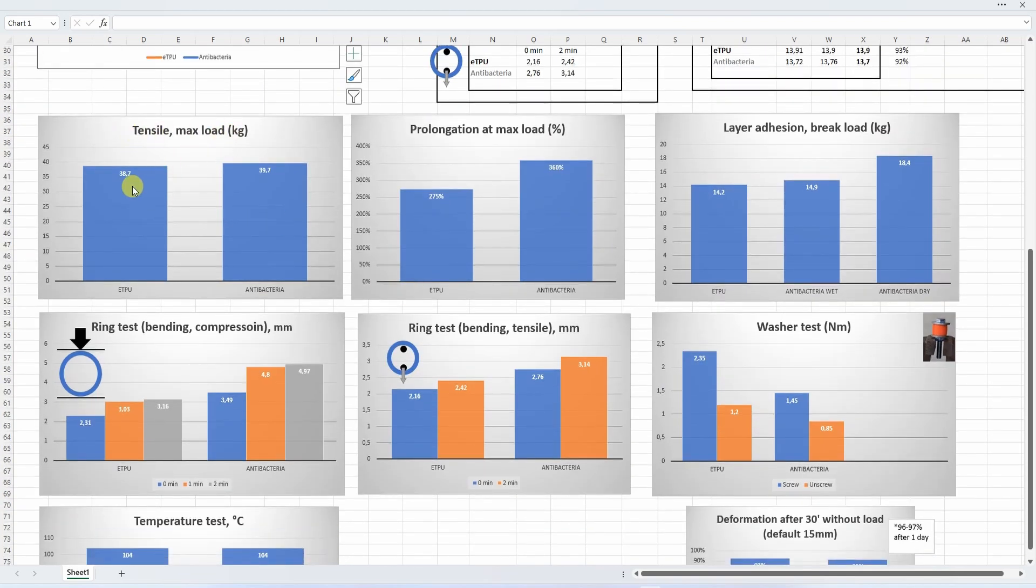The rest of the data I will show you on the charts. The tensile test, very similar values here. The elongation, here we can see some differences because antibacterial was more elastic in this case.